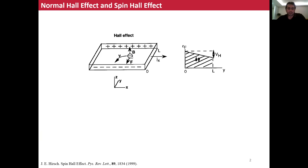Because of this force, the electrons will move to one side of the material. Because electrons are collected at this side, the Fermi level of this side increases compared to the other side. So if we put a voltmeter between these two sides, we can observe a voltage difference. This voltage depends on the magnetic field's magnitude — if we increase the magnitude of the magnetic field, the observed voltage will increase. Remember that there is no spin information of the electron in this concept.